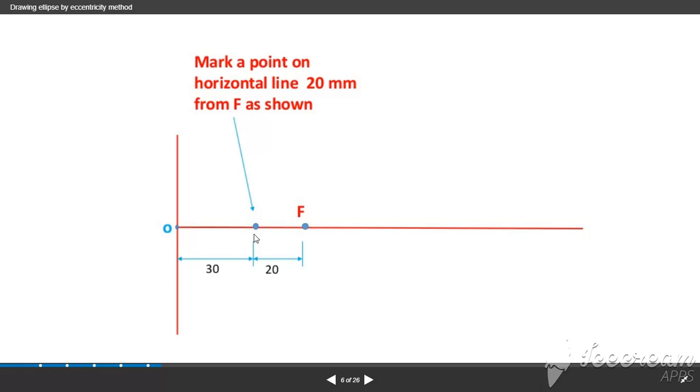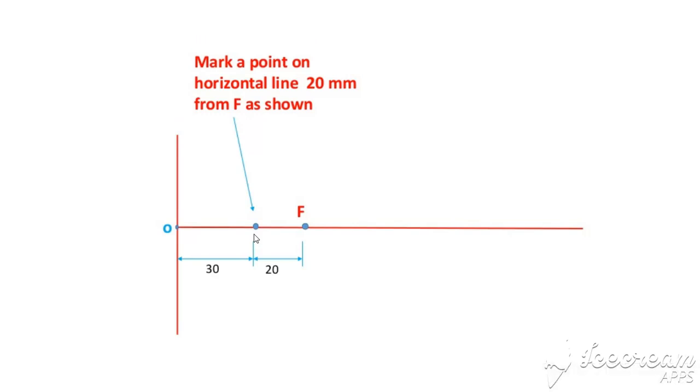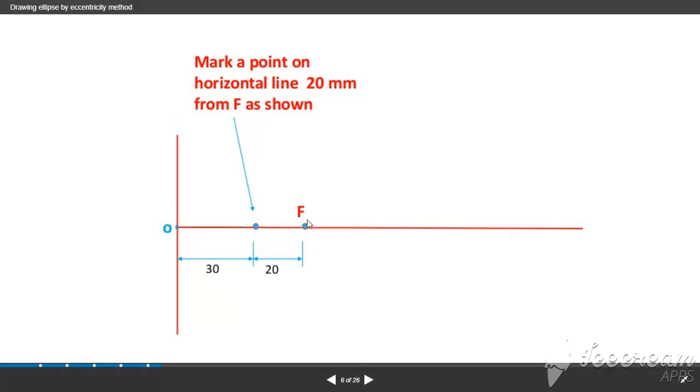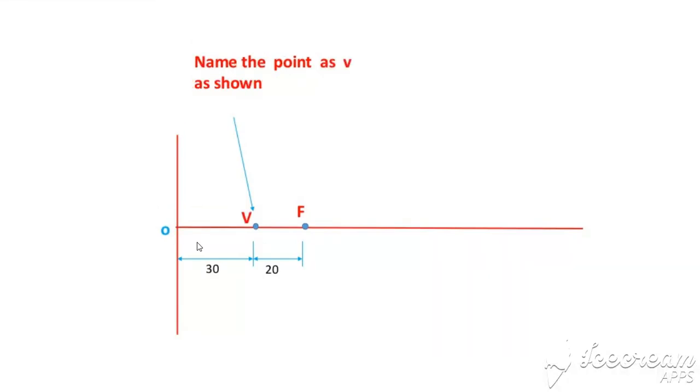What is eccentricity? Eccentricity is the distance of a point from the focus to the distance of that point from the directrix. Name the point as V as shown.